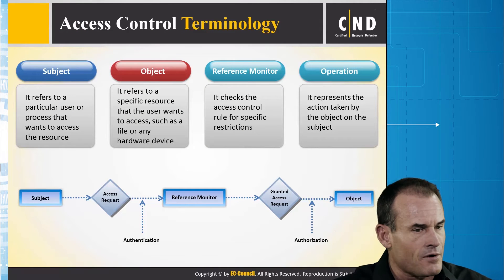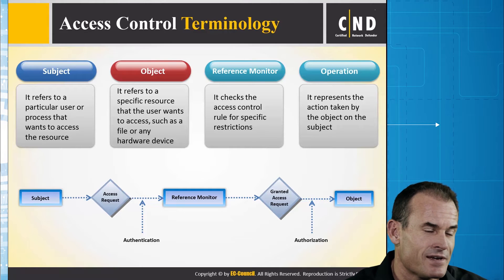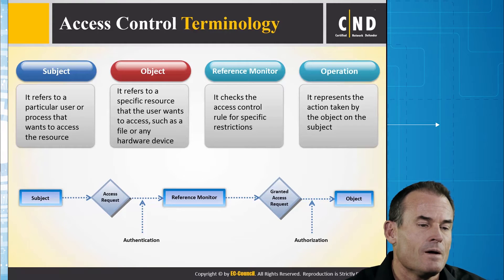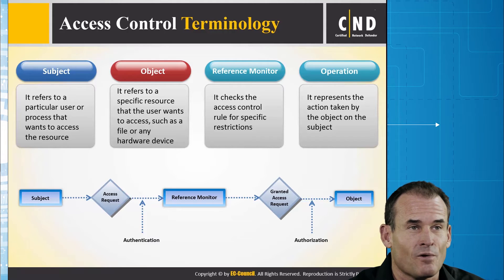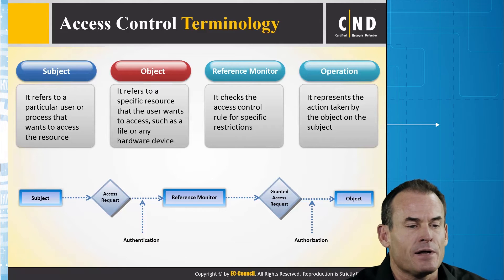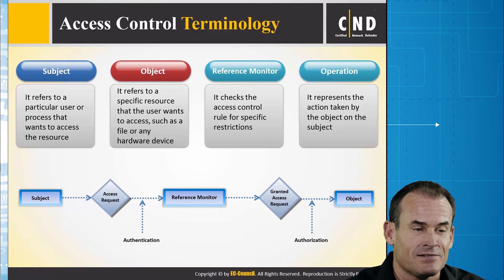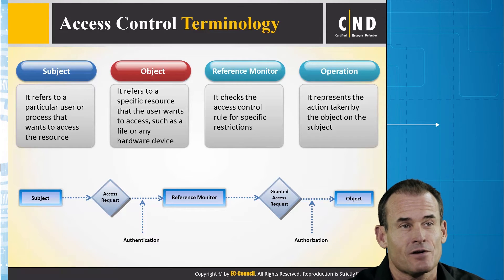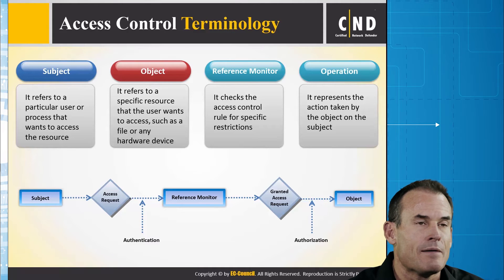Some additional terms for access control: the subject is whoever is requesting access — your user account, or it can also be an application. The object is the resource the user wants to access, such as a file or hardware device. The reference monitor is the component — like the security kernel — that checks the access control rules for specific restrictions. It's the gatekeeper. When I access an object, the reference monitor identifies who I am, what the object is, checks an access control list, and determines what I'm authorized to do with that resource.